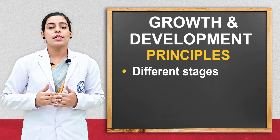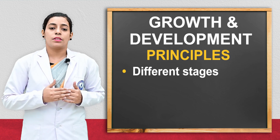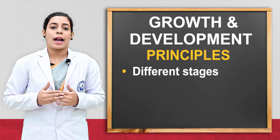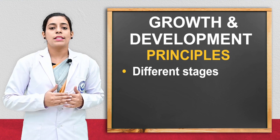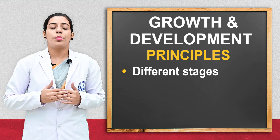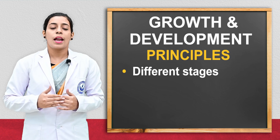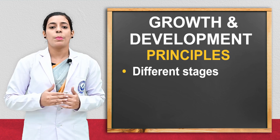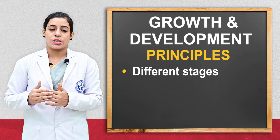The next principle is that growth and development occurs in stages: infancy, toddler, preschooler, schooler, and teenage. So development happens at different ages across these stages.